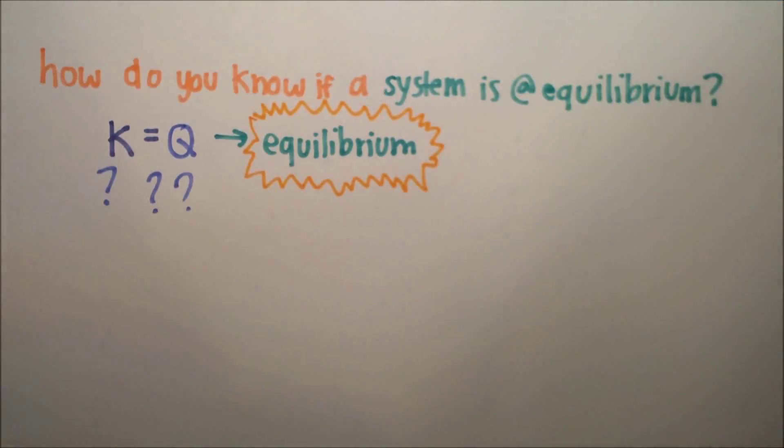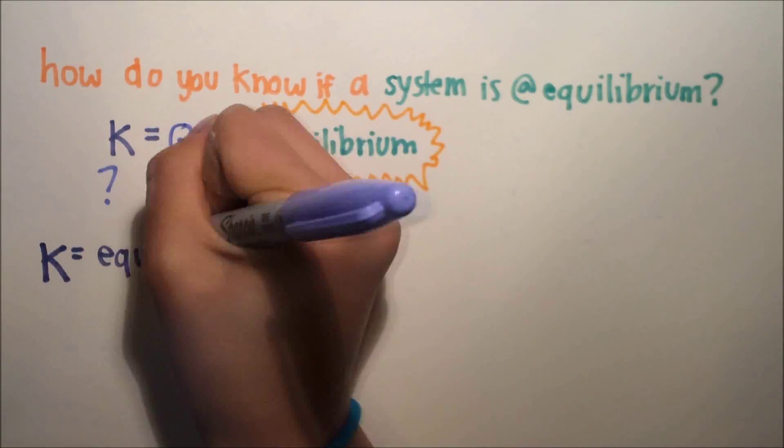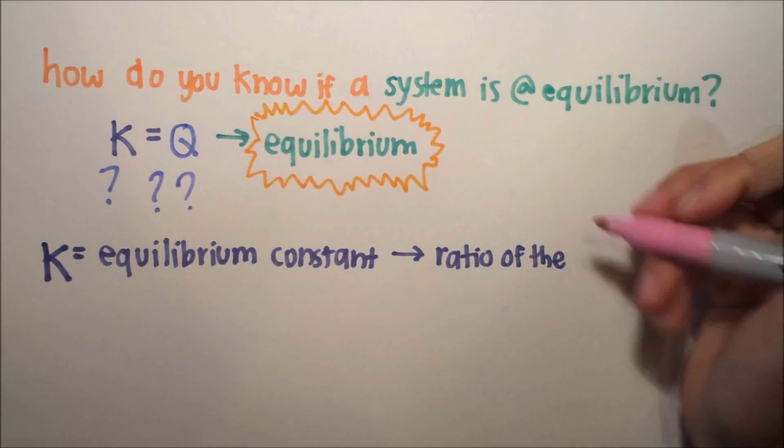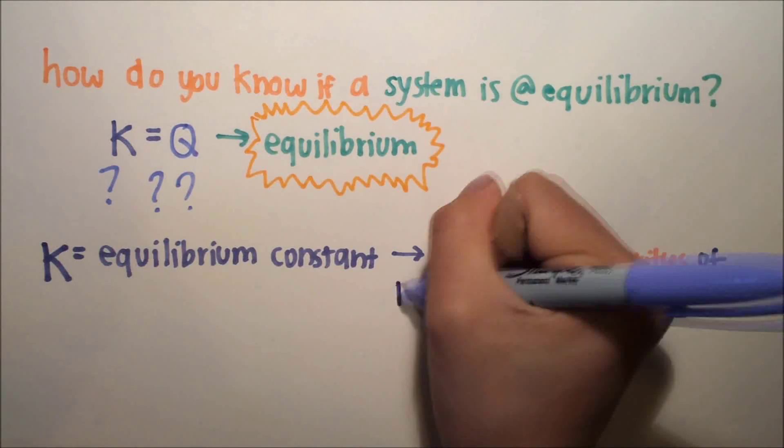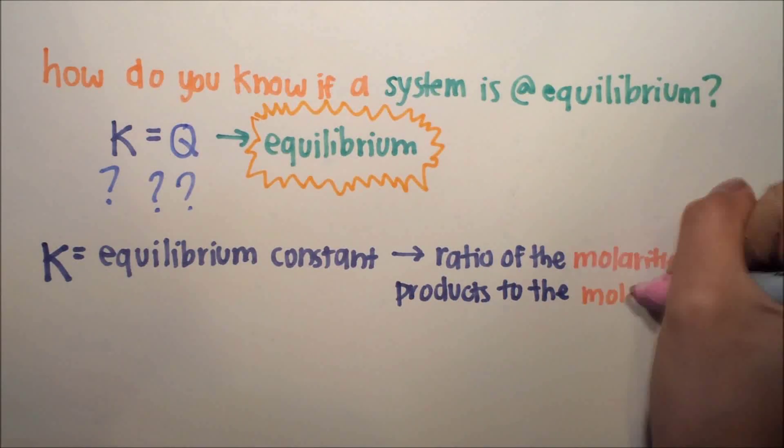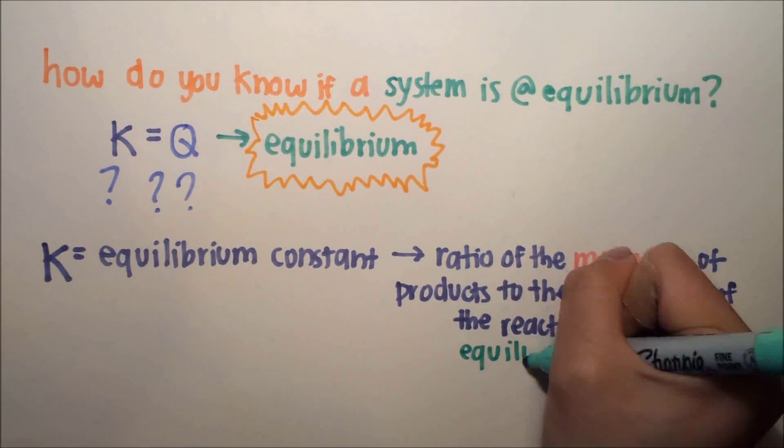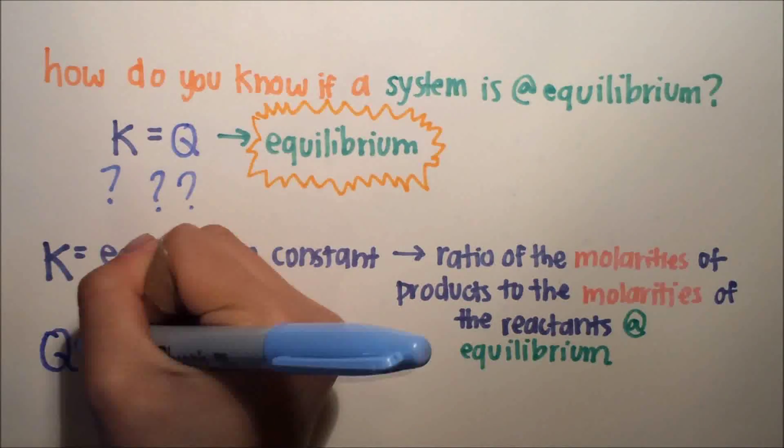So K is also known as the equilibrium constant, which is basically the ratio of the molarities. Make sure it's the molarity of the products over the molarities of the reactants at equilibrium, which is very important.